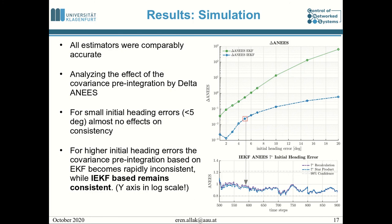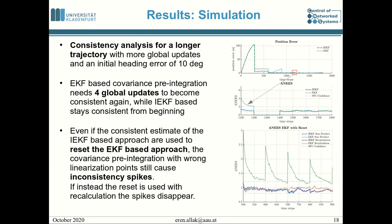Furthermore, the ANES for an initial heading error of 7 degrees is shown in the bottom graph, and for the IEKF-based covariance pre-integration there is almost no difference from the reference. We also analyzed consistency for longer trajectories where multiple global updates are received, starting with a 10-degree wrong initial heading. The EKF-based covariance pre-integration needs 4 global updates to become consistent again, while the IEKF-based computations stay consistent the whole time.